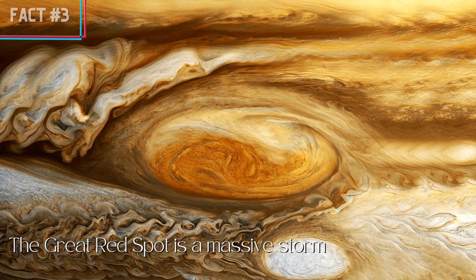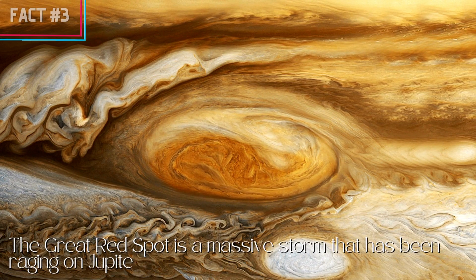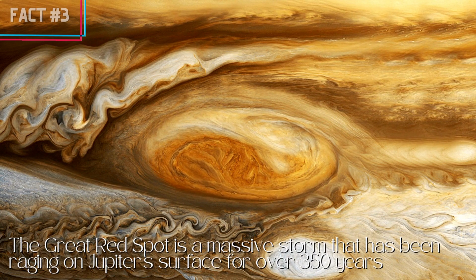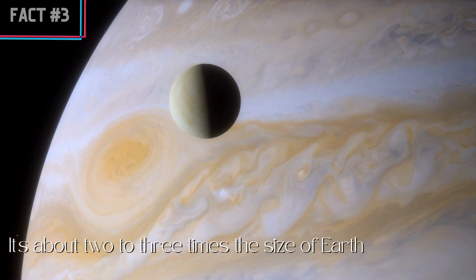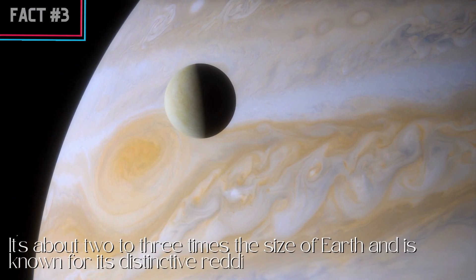The Great Red Spot is a massive storm that has been raging on Jupiter's surface for over 350 years. It's about two to three times the size of Earth and is known for its distinctive reddish color.